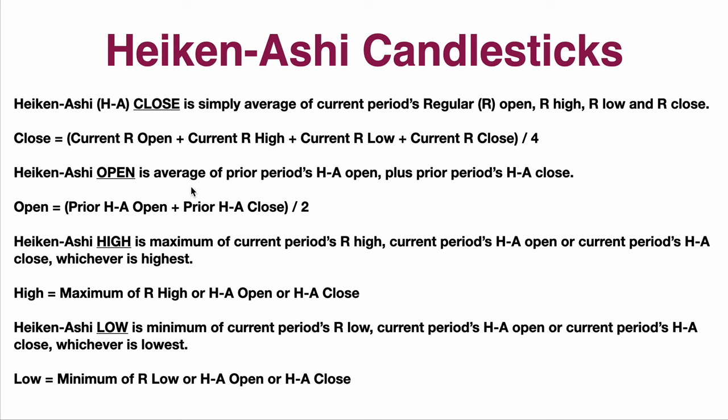Prior — that's the prior period. So it would be, if it's a daily candle, the prior day. So what you're doing there is you are literally taking the Heiken Ashi open and the Heiken Ashi close of the prior day, dividing them by two. That's what you open at. Sort of the Heiken Ashi average of the prior day, and you're comparing that to draw your candle based upon the average of everything that happens in the daily candle that you are using.